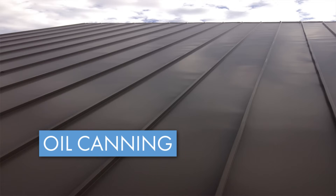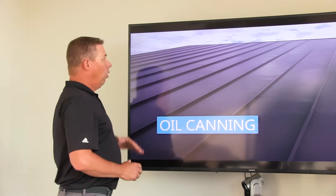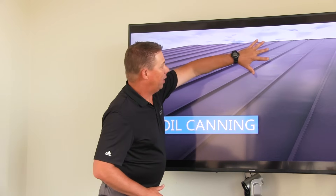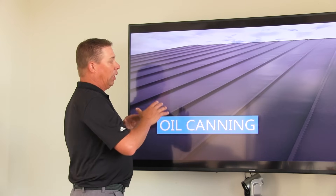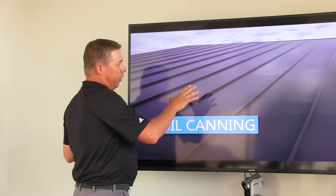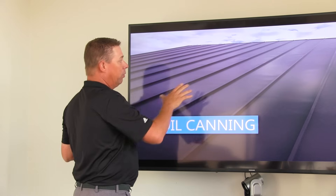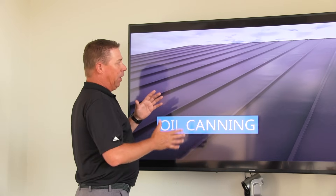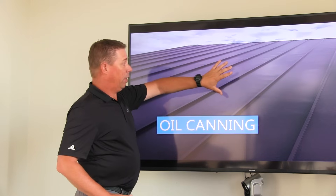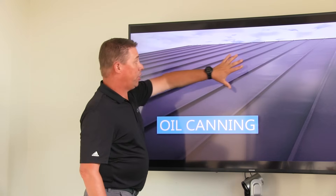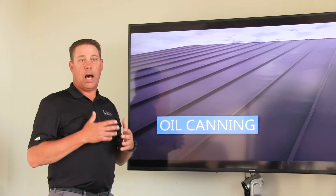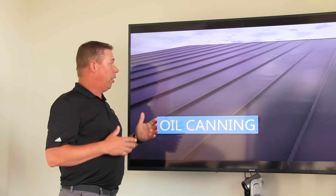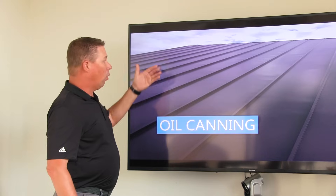First we're going to talk about oil canning. What is oil canning and how does it affect a roof? Oil canning is in these areas that kind of define and shadow out — you can really see the waves in the material, you can see the waves of the roof. It could be the material itself, or it could be the roof condition that depicts that oil canning, so there are a lot of different scenarios that build the case for oil canning.